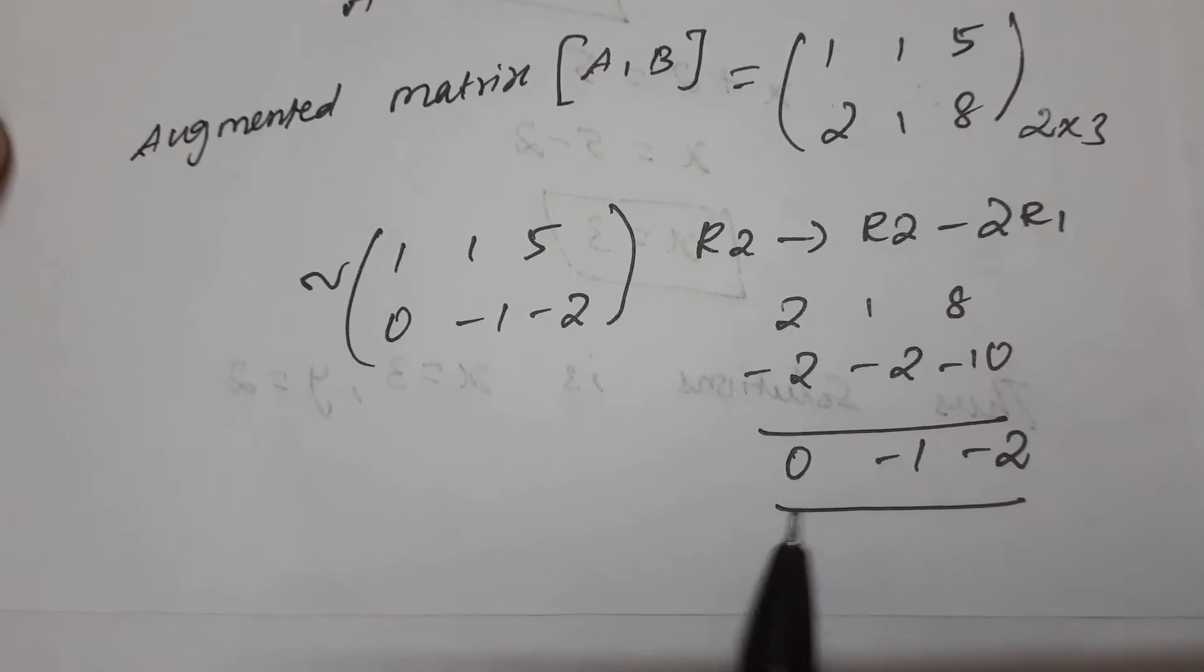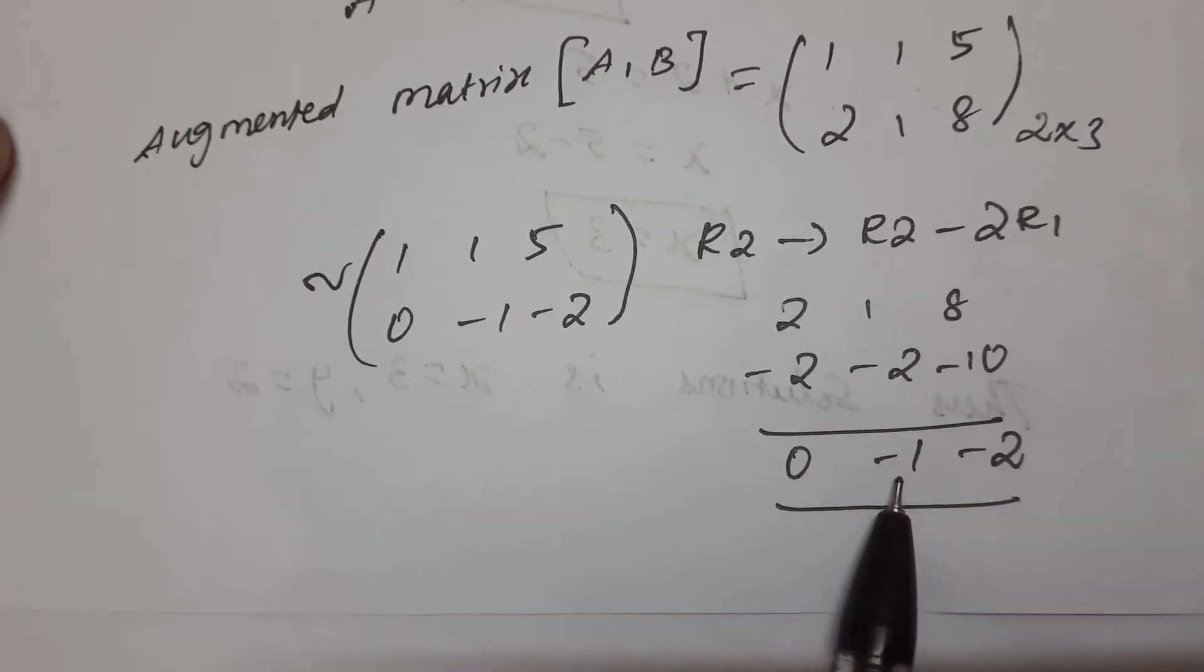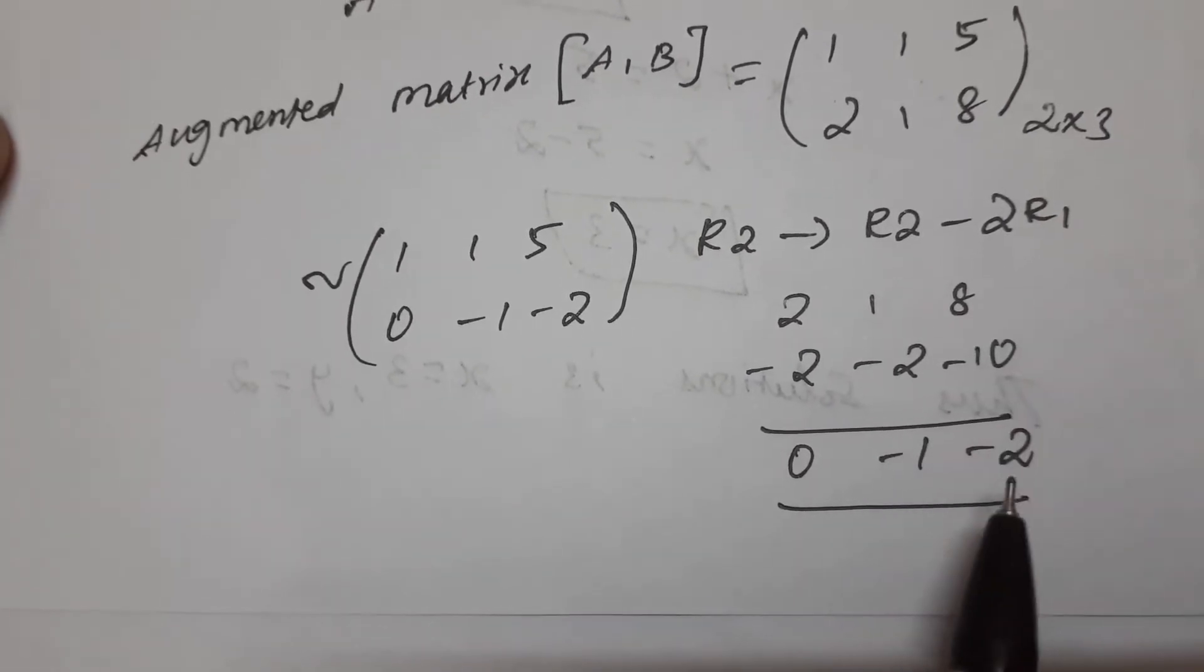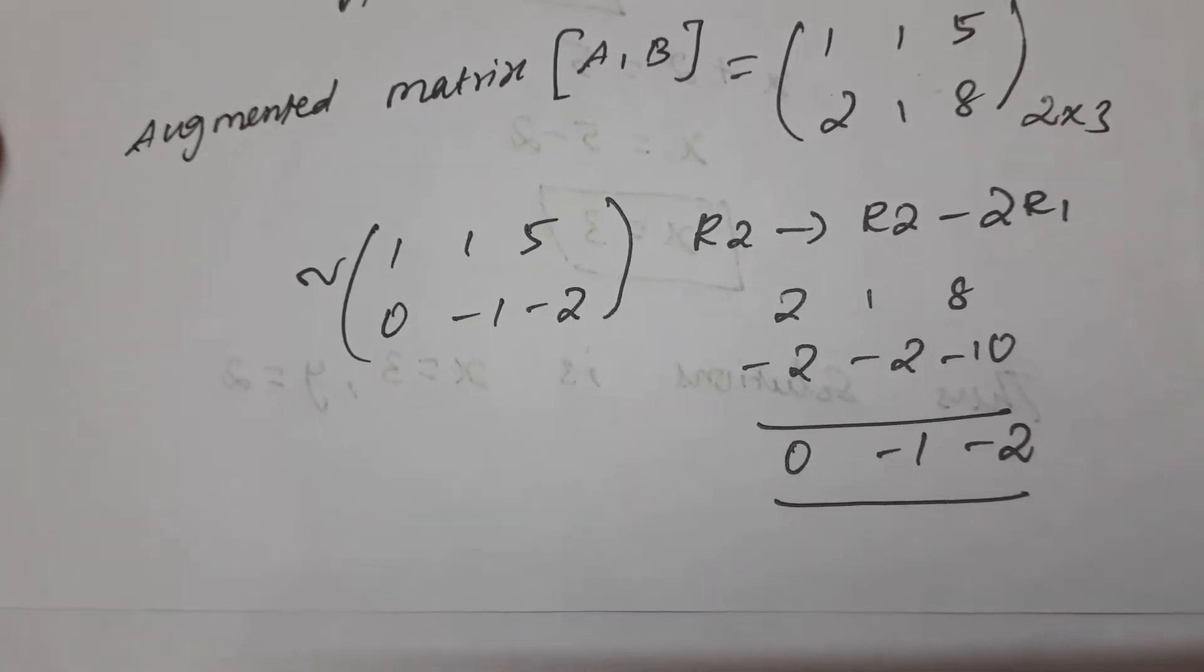So -2 -2 -10. What we get is 0: 2-2 is 0, 1-2 is -1, 8-10 is -2. Then 0 -1 -2. Clear?